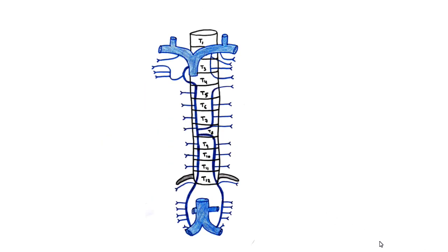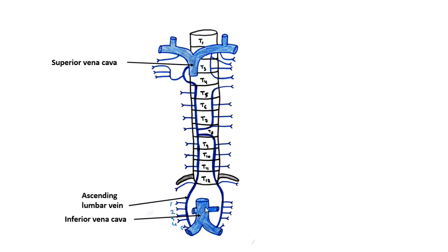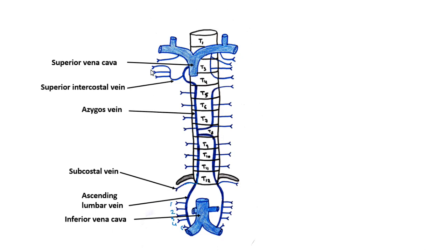This is the schematic diagram. Superior vena cava, inferior vena cava, then the ascending lumbar vein joining with the four lumbar veins, and the right subcostal vein join to form the azygous vein. At the level of T4 it will arch along the right hilum and turn into the superior vena cava. The second, third, and fourth intercostal veins join to form the superior intercostal vein. Posterior intercostal veins 5 to 11 drain directly into the azygous vein, and the first drains into the right brachiocephalic vein.